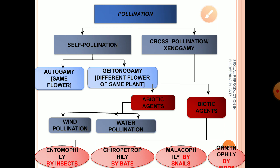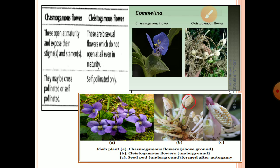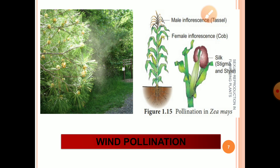Specific terms are given to each biotic pollinating agent: if pollination takes place by insects it is entomophily; by bats, chiropterophily; by snails, malacophily; and by birds, ornithophily. Those plants where different agents play an important role in pollination possess specific characteristics.